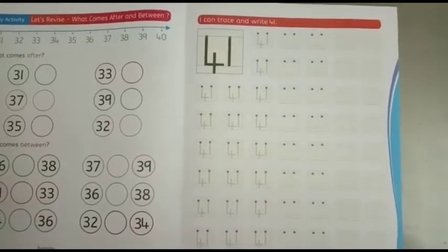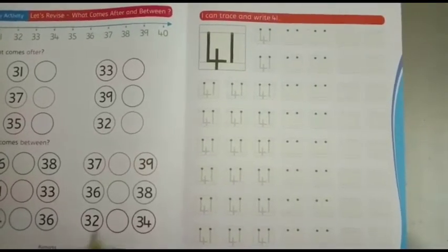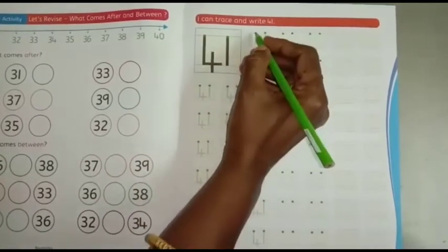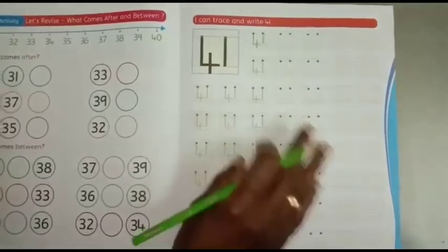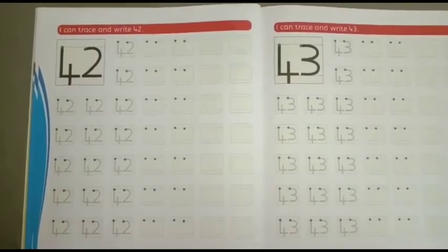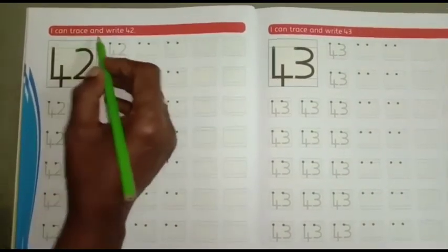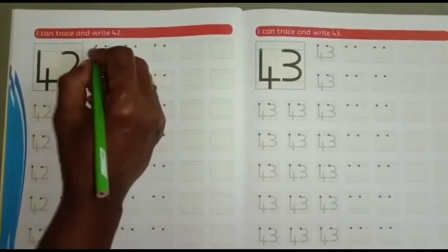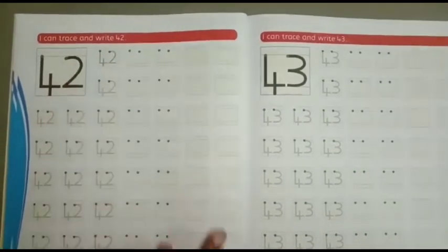Then all of you take your wings, fly high, skill book page number 29. I can trace and write 41. First four, then one. 41. Then four, two. 42.